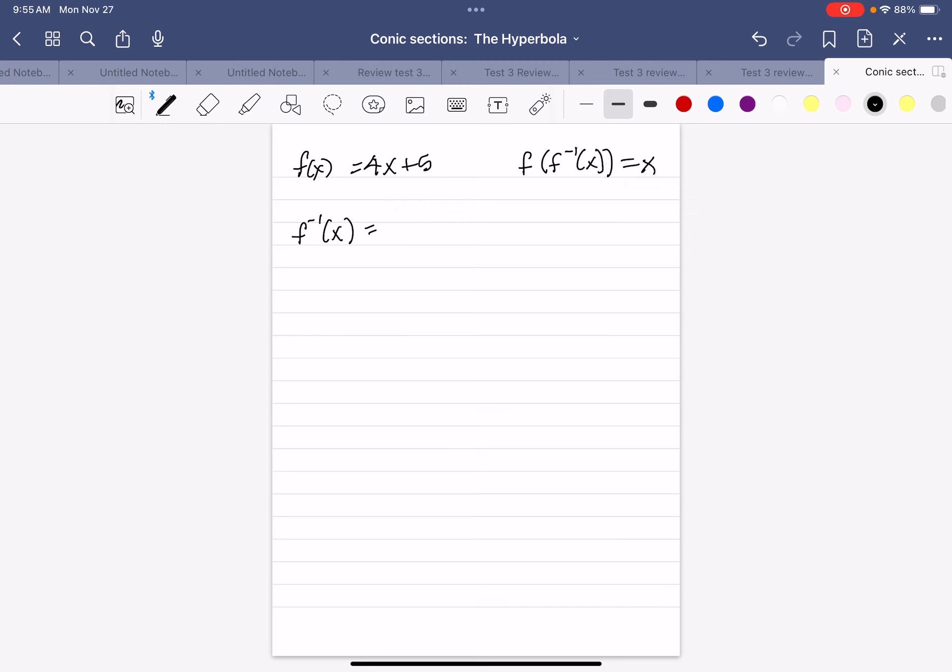So our inverse was (x - 5)/4. So if I put f inverse of x into f(x), that means f of this whole expression. So inside of f, which is 4x + 5, I have to put (x - 5)/4.